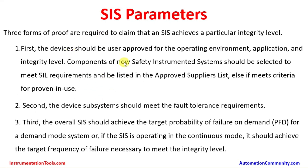The first requirement is that devices should be user-approved for the operating environment, application, and integrity level. Components of a new safety instrumented system should be selected to meet SIL requirements and be listed in the approved suppliers list, or meet the criteria of 'proven in use' — meaning the same type of instrument is used in a different plant with an identical installation in a similar geographical zone where ambient and environmental conditions are typical. Instruments used in Western countries cannot be directly applied in Asian or Asia-Pacific regions due to differing environmental conditions.